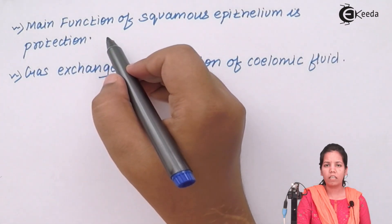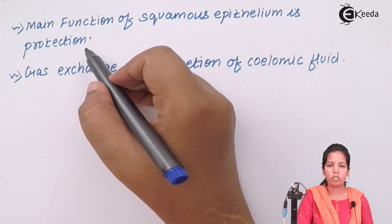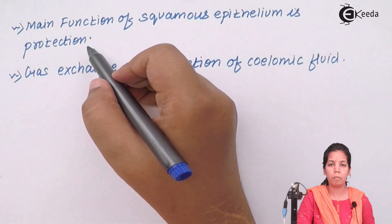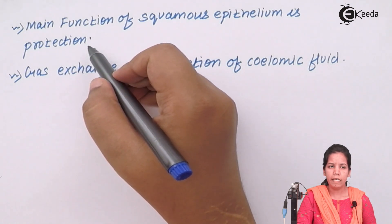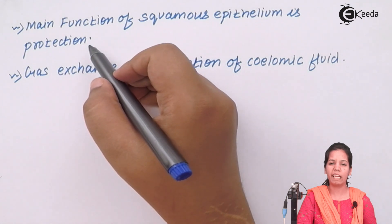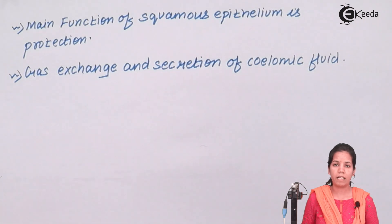The two striking functions of squamous epithelium are: one is protection. When it does protection, it covers the lining of your mouth or buccal cavity and protects it from bacteria, simple acidity, or certain kinds of salts which are not good for your health whenever you consume them in food. Also, whenever it forms the lining of your stomach region, it protects the stomach cells from HCl stored in your stomach.